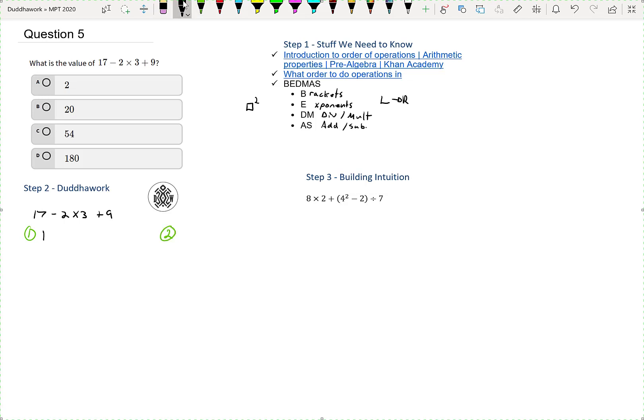So if we do 17 minus 2 times 3, so it'd be 2 times 3, so that's 6, and then plus 9. And now we're on the AS level, and so we do addition and subtraction from left to right. So we could do 17 minus 6, which is 11.